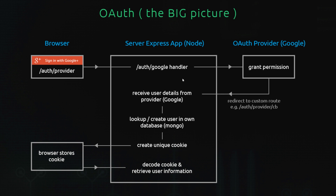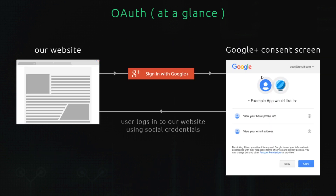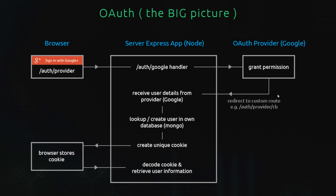We're going to handle the route '/auth/google' when they click on the button, and at that point we say: okay, this user wants to log in with their Google profile, so I'm going to redirect you to the Google permission screen. They're there now and they're going to grant us permission to use their profile. As soon as they do that, we redirect them to a custom callback route — I've called it '/auth/google/cb' — because this is a callback route.